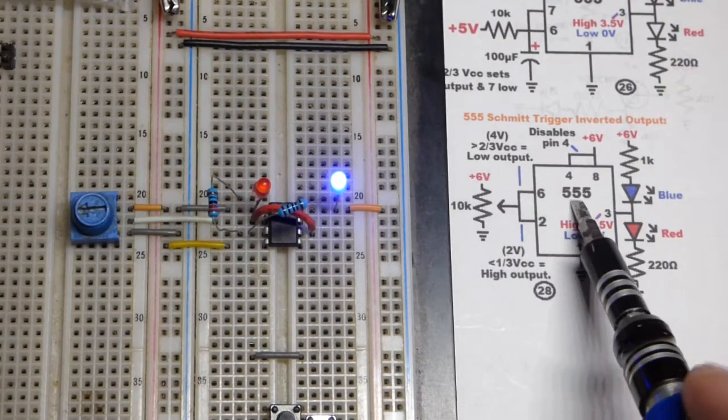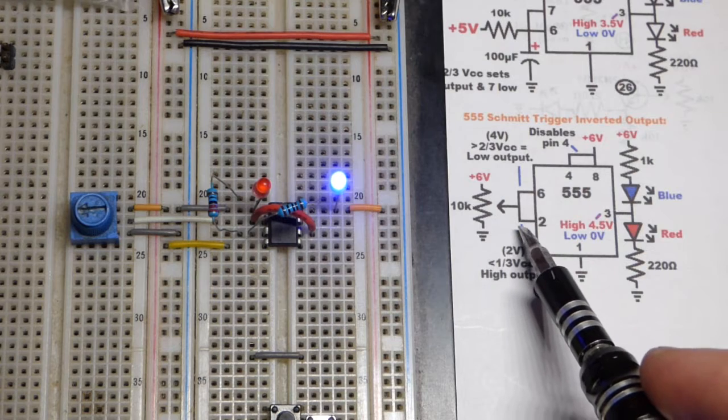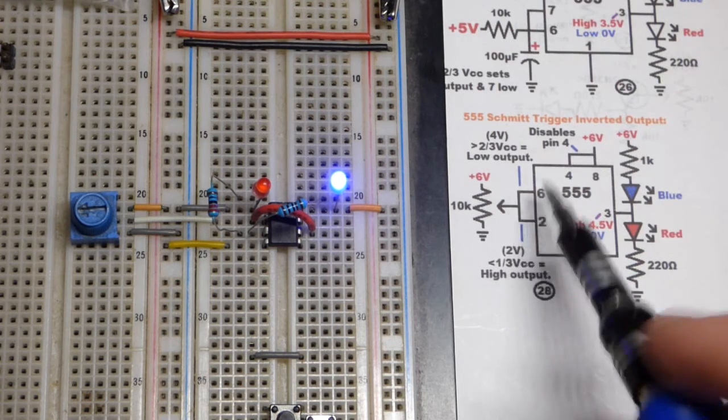So now in this video we have a 555 timer that I wired up. It's basically an inverter, but it's got hysteresis.